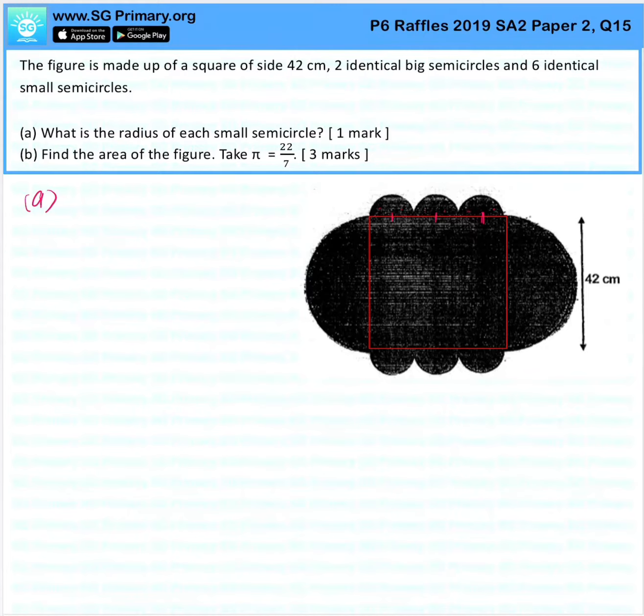1, 2, 3, 4, 5, 6. 42 divided by 6 is 7 cm. That's the radius of each small semicircle.